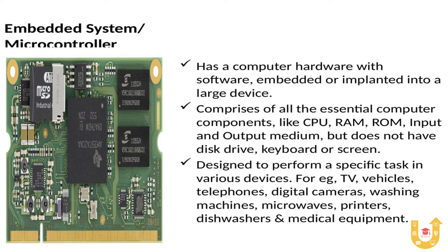For example, in a microwave oven, the role of the embedded system is to take instructions from the user through the keypad — such as setting the time and pressing the start button — and translating them into commands passed on to the microwave to obtain the desired output, stopping as per the timing set.